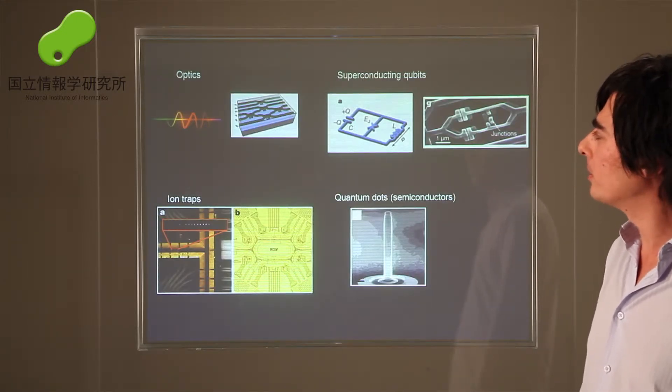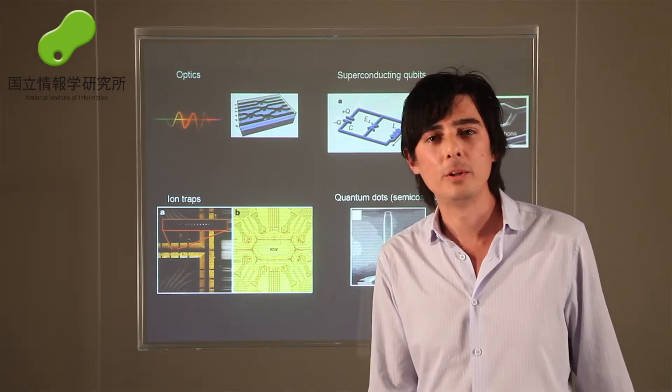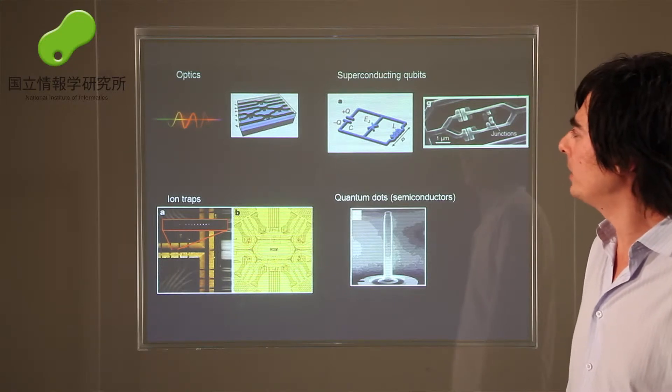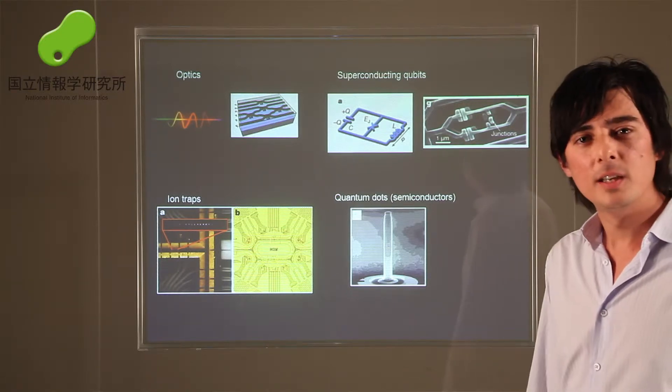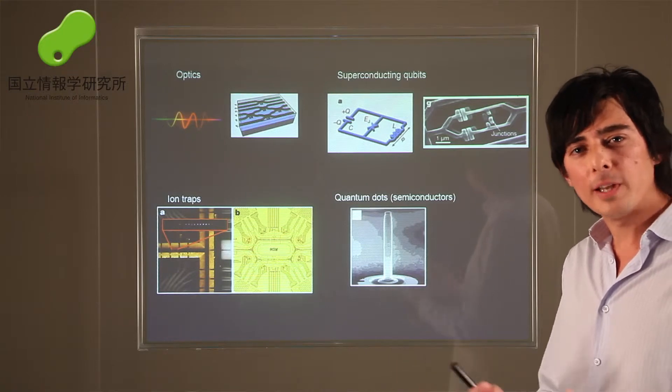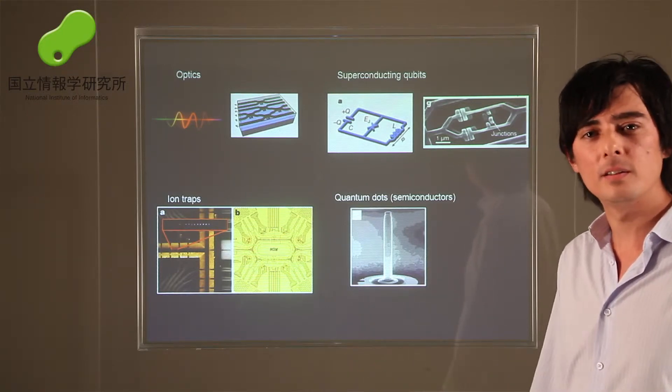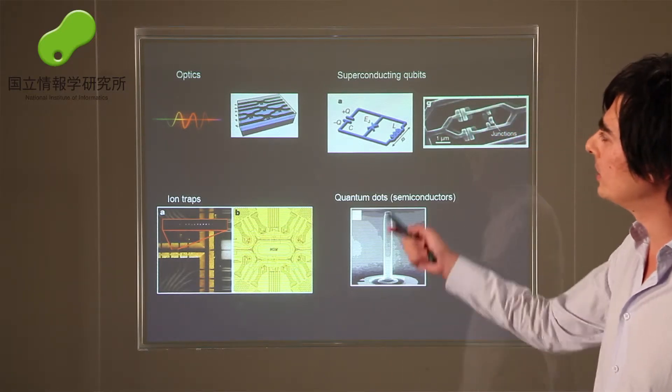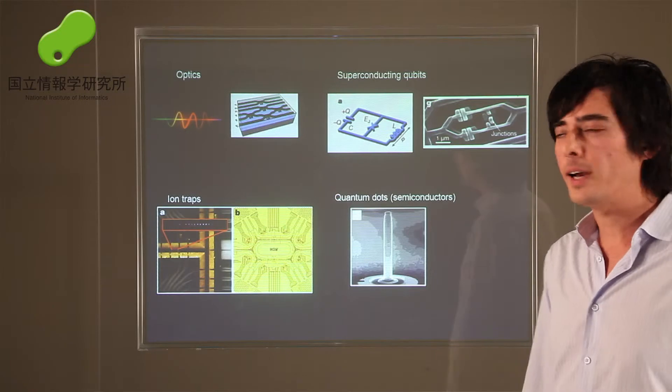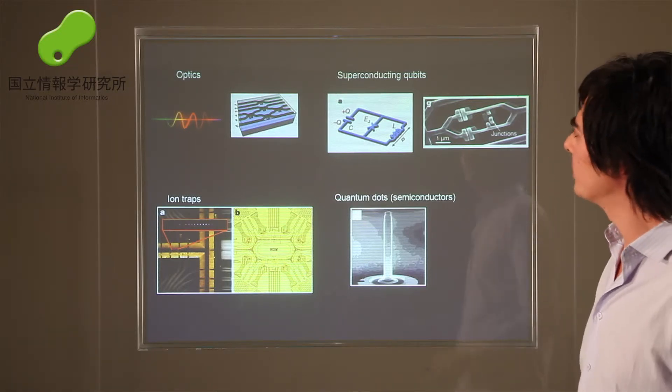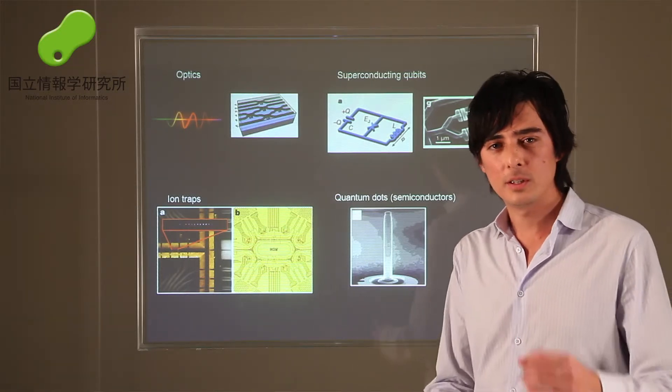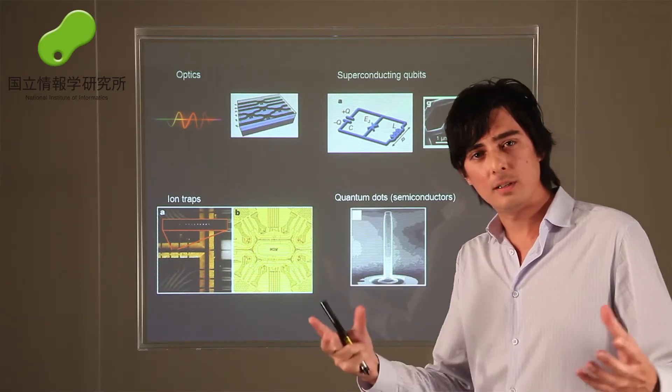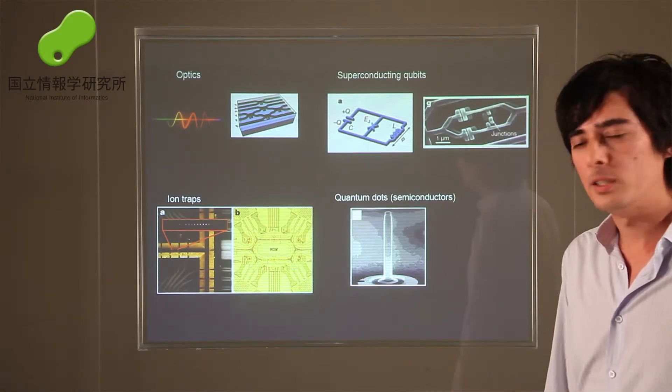The way people are going about trying to make quantum computers and quantum information devices are quite varied at this stage. In my opinion, this reflects the early stage that this research is in. People don't really know what the best way is. There are ideas using optics, which is basically using light, or using superconducting circuits, ion traps, which are small ions suspended within electric and magnetic fields, and other semiconductor systems.